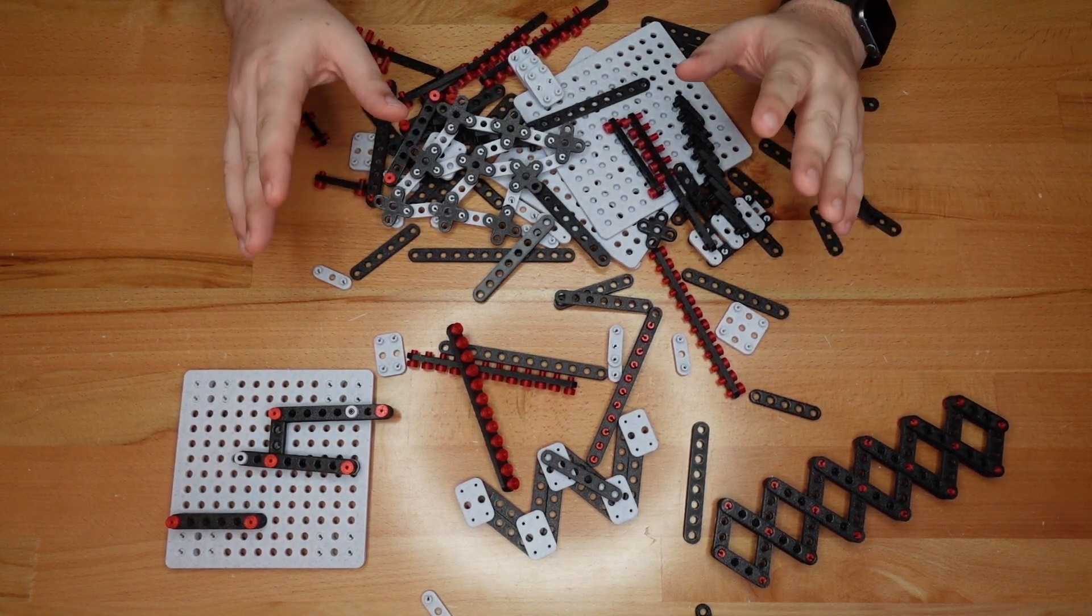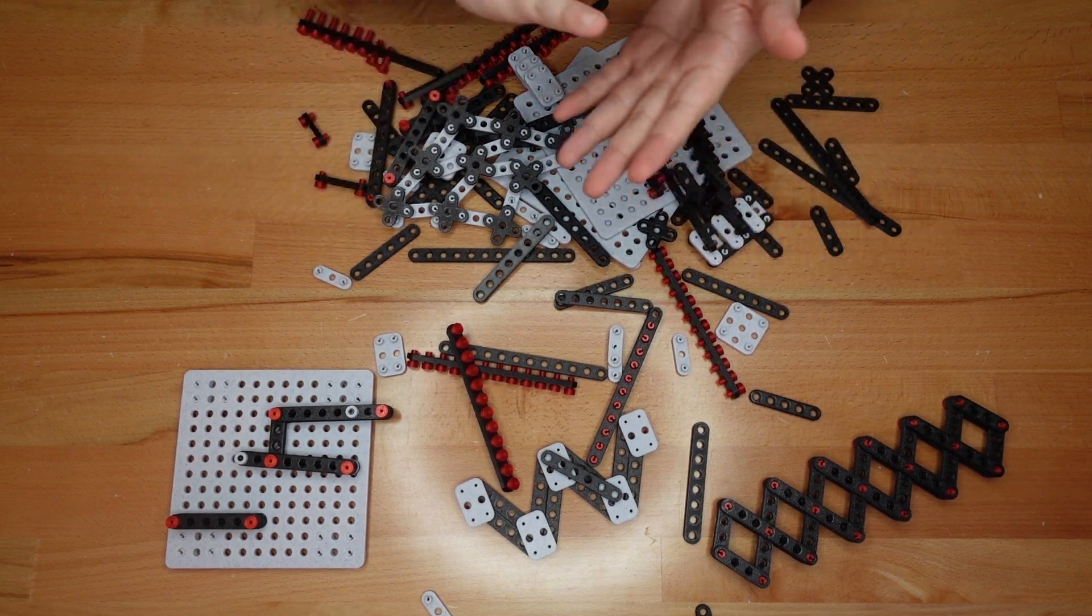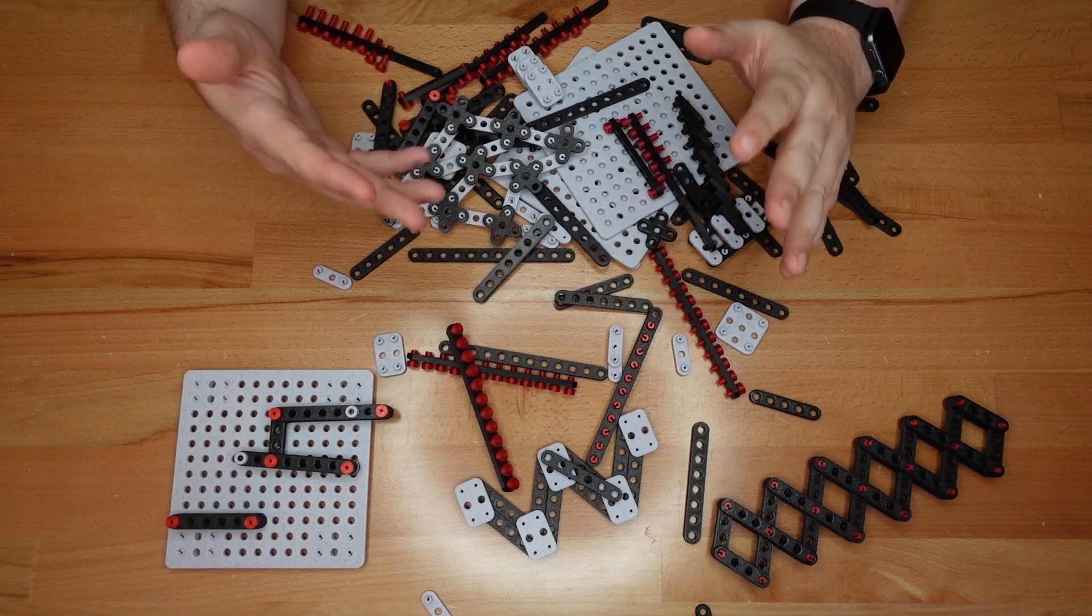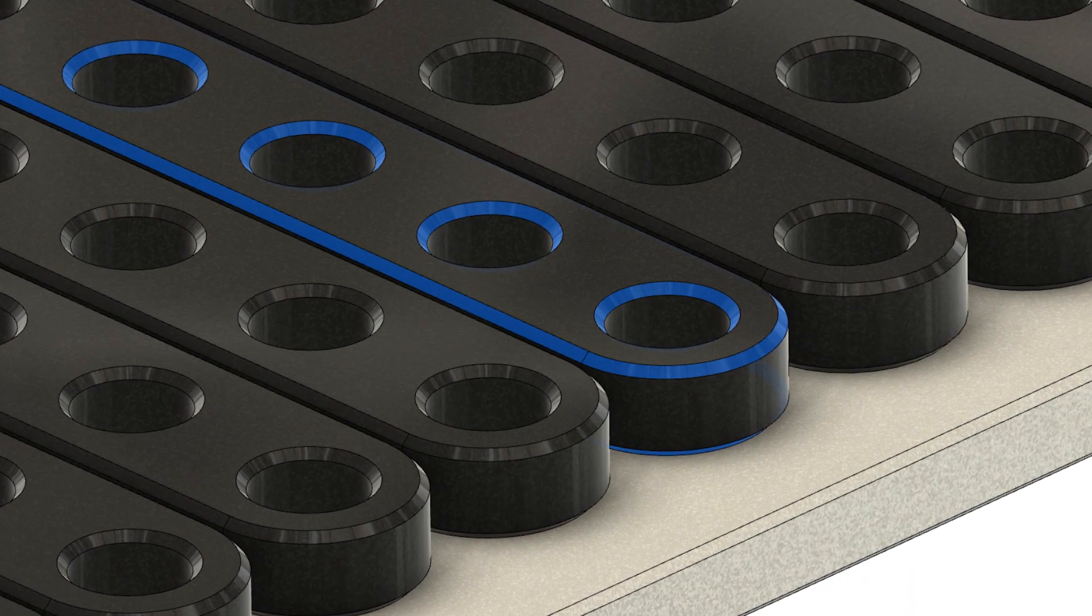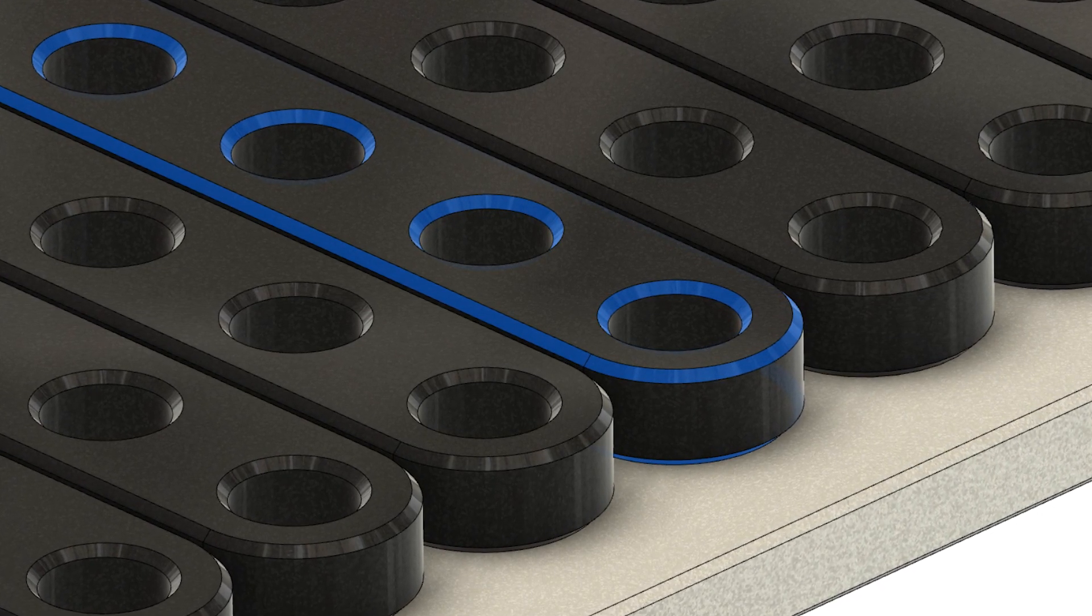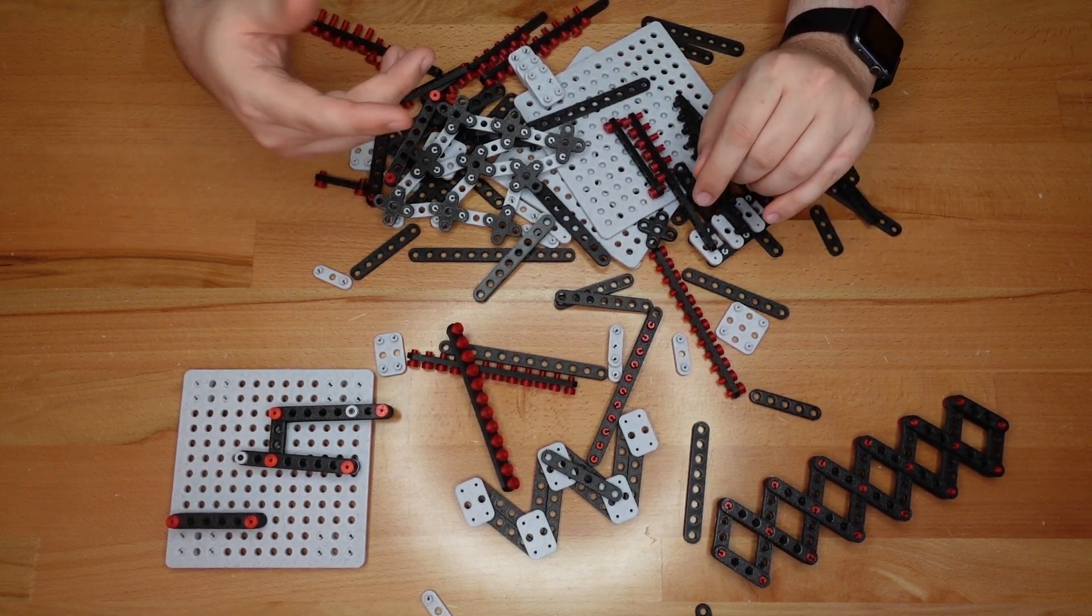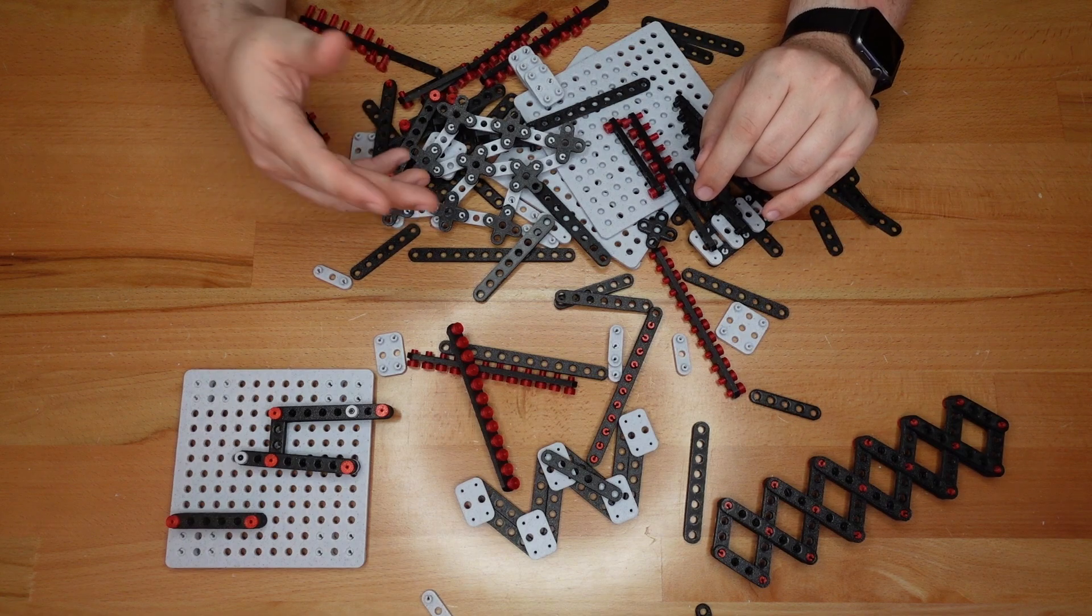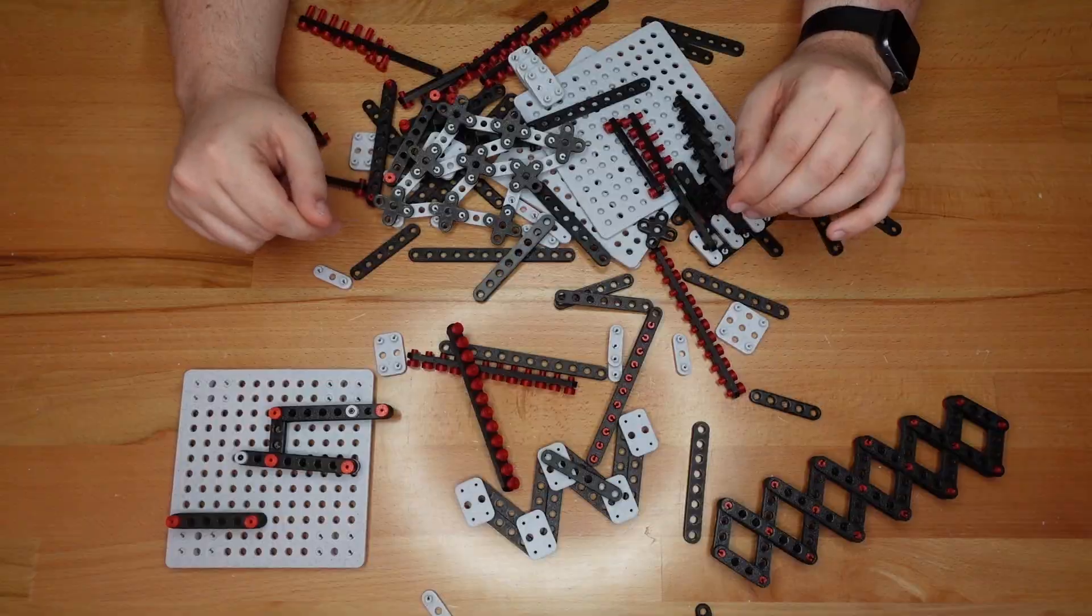Finally, I suspect that the largest hurdle for this design will be elephant's foot, that extra squish you sometimes get on the bottom few layers of a print. I've tried to counter this in the design itself by giving the links a large chamfered edge, but that might not be sufficient. If one side of your print looks extra squished, try reducing your z offset, or lowering your print temperature, or reducing your extrusion multiplier. If your slicer supports it, you can also increase your elephant's foot compensation.